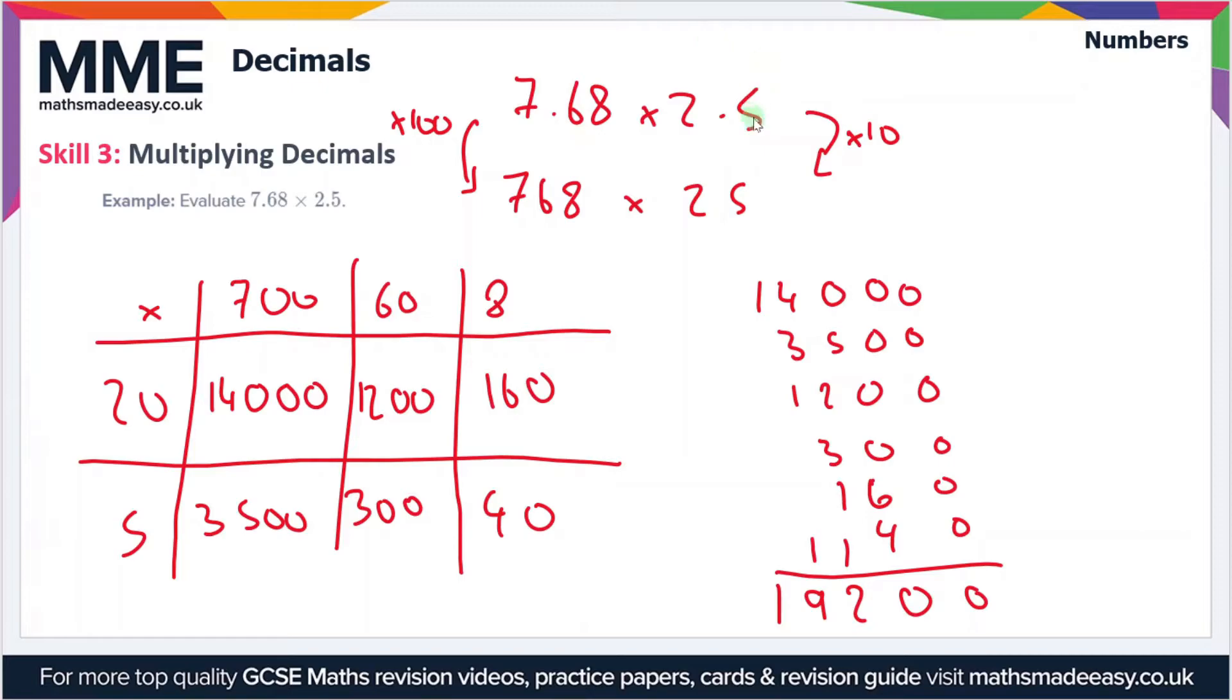But at the start we moved the decimal place here, so we multiplied by 100 and then by 10. So 10 times 100 is 1,000. So we have to divide by 1,000 here. We've got 19,200, so if we divide by 1,000, that gives us 19.2 as our final answer.